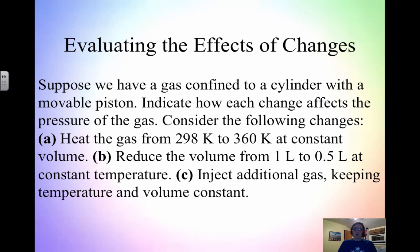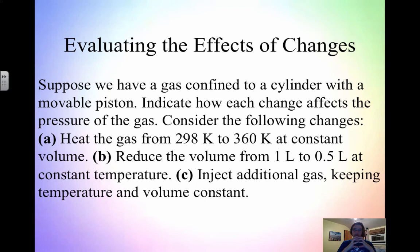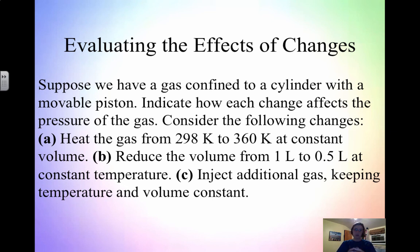For B, you reduce the volume from one liter to half a liter at constant temperature. You have the same number of particles but less space, so you have more collisions in that container — more collisions means more pressure. For C, you add additional gas to the container at constant volume. Instead of maybe five molecules, you now have ten. With more molecules, you have more collisions, and therefore pressure goes up.